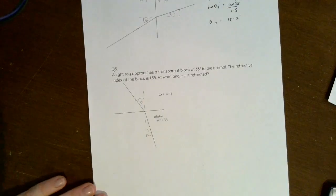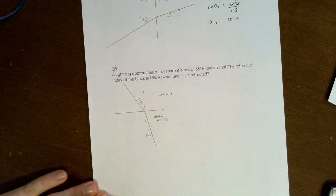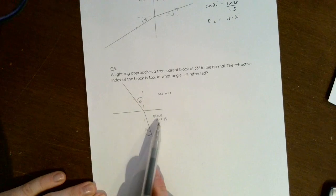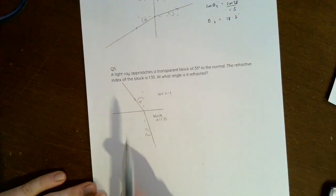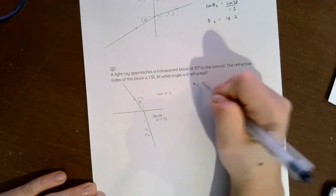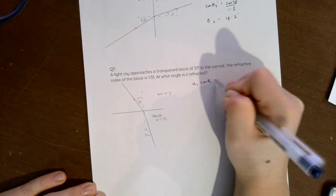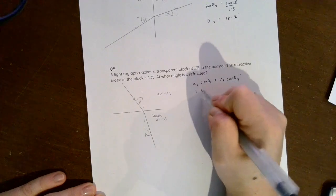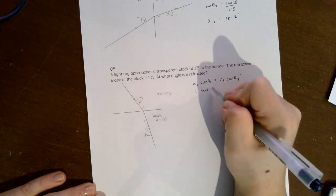And then number 5, again pretty straightforward. So this time we're again approaching a transparent block, and this time we've got a new refractive index of 1.35, but we know we start in air where n is 1. So n₁ sin θ₁ equals n₂ sin θ₂. 1 sin 33 equals 1.35 sin θ₂.